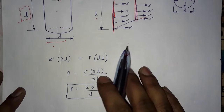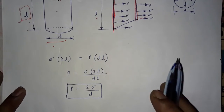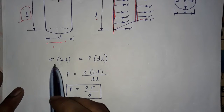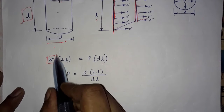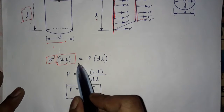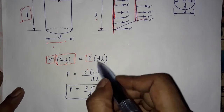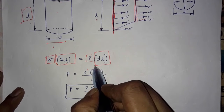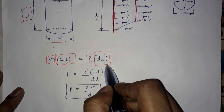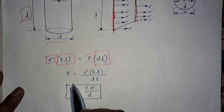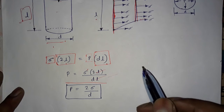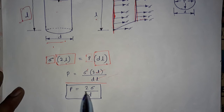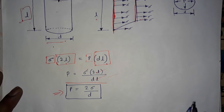To find the excess pressure inside the liquid jet, we use the same static equilibrium condition as before. Surface tension force is given by σ × 2L (circumference along the length), and force due to excess pressure is given by P × d × L (normal area). Cancelling L from both sides, we get P = 2σ/d. This is the equation for excess pressure inside a liquid jet.